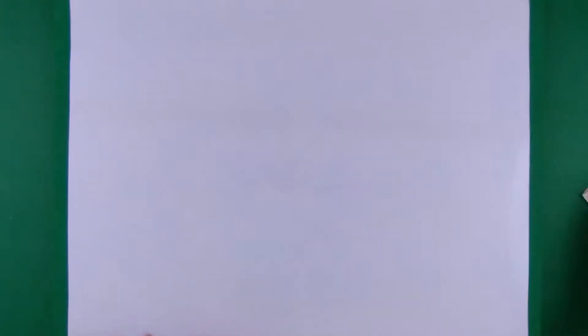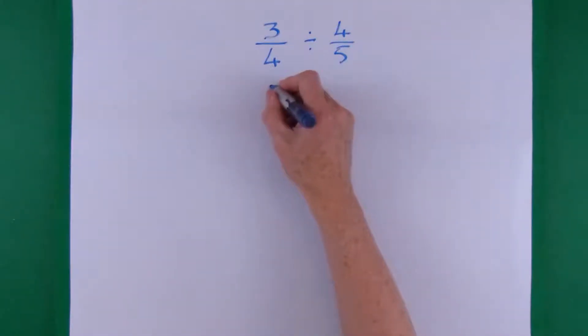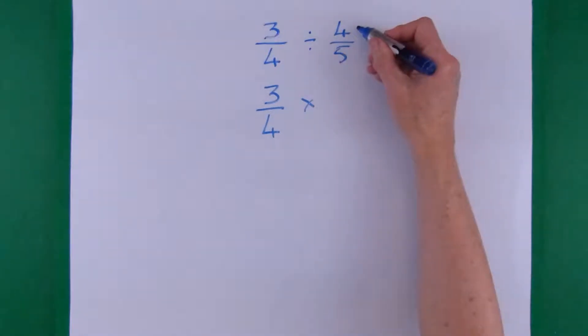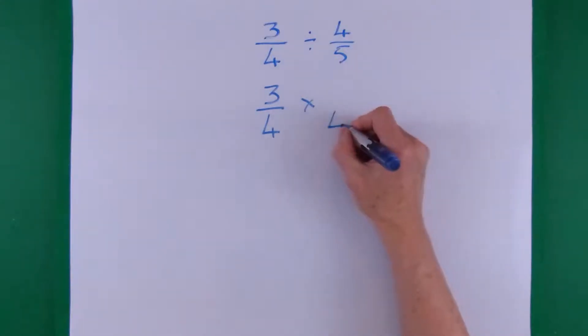The question we're going to do here is 3 quarters divided by 4 fifths. I rewrite the first fraction on the second line exactly the same. We're changing to a times. So the times number, it divides the opposite. So the times number becomes the divide number. And the divide number becomes the times number. You turn the second fraction upside down.